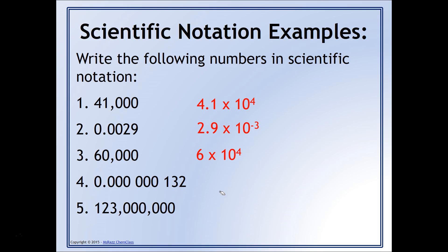For number 4, this is a fairly small number. Again, your exponent is going to be less than 1, and so therefore it's going to be negative. So again, to move that decimal point in between the 1 and the 3, right, the 1.32 would be your coefficient, you're going to have to move it a total of 7 times to the right.